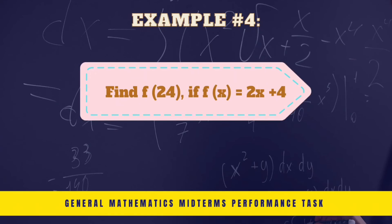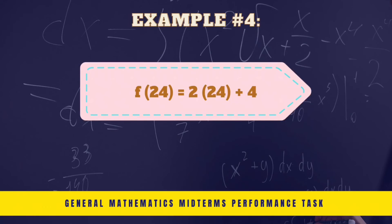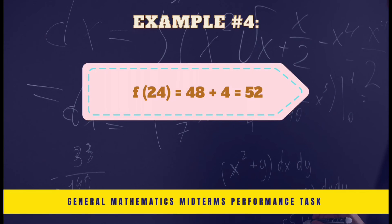Find f(24) if f(x) is equal to 2x plus 4. 2 times 24 plus 4. We then multiply 2 to 24. We then get 48 plus 4. So the numerical value of the function is 52.